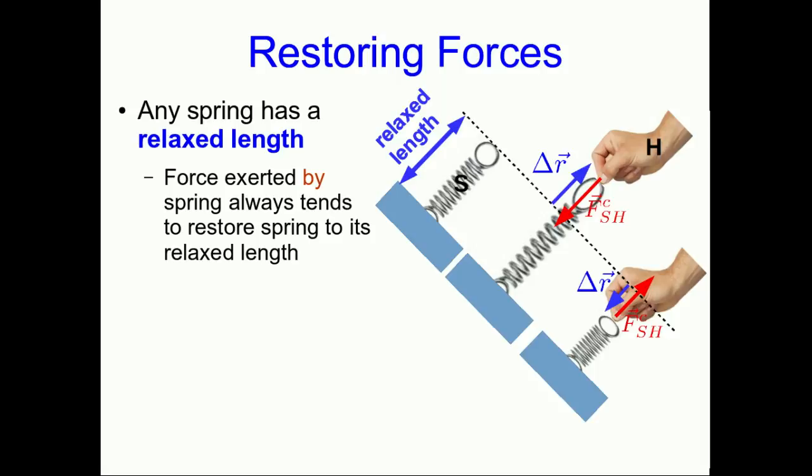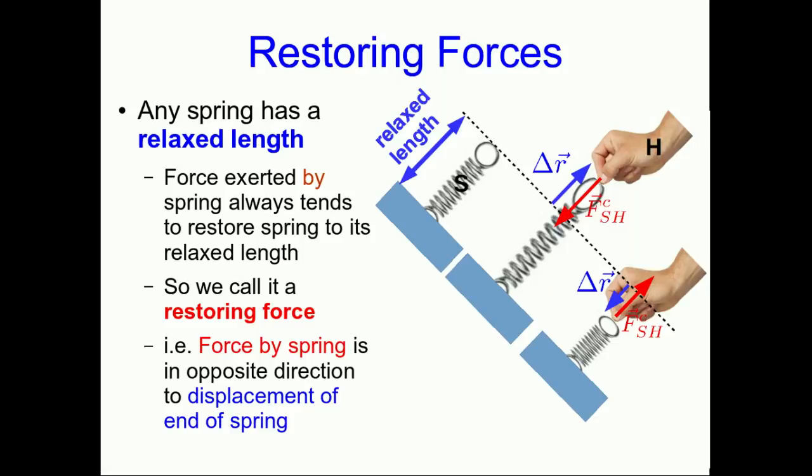If you push on the spring instead of pulling on it, then you can feel it pushing back on you. Again, the force that the spring is exerting on your hand is pointing back towards where the end would be if the spring was at its relaxed length. Because these forces that the spring is exerting always point back towards its relaxed length, we call these restoring forces. The other way of thinking of them is that the force exerted by the spring is always in the opposite direction to the displacement vector of the end of the spring.